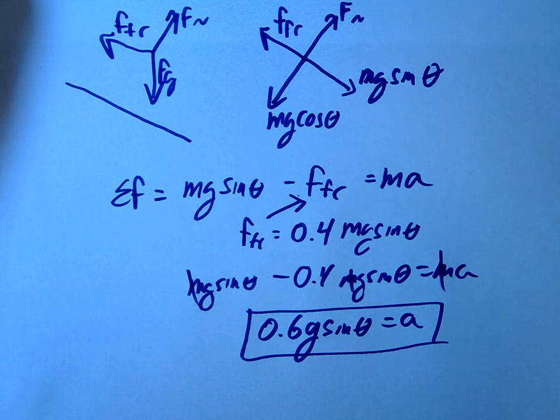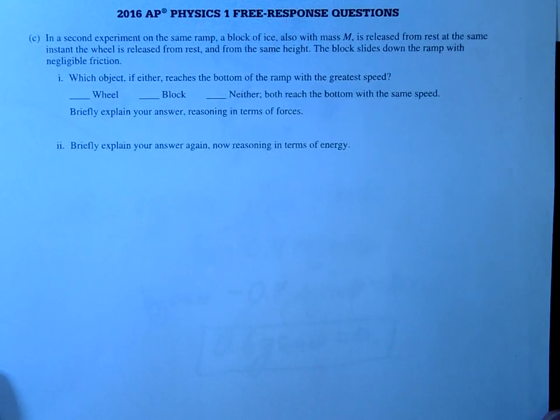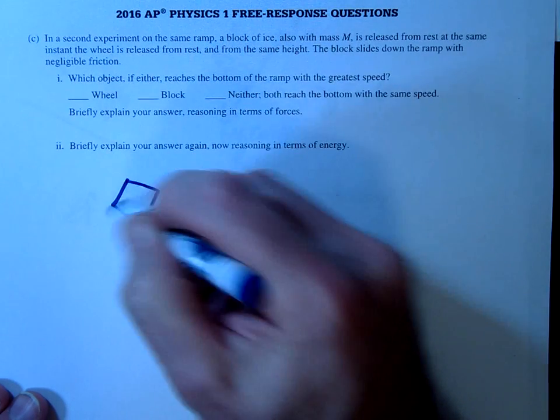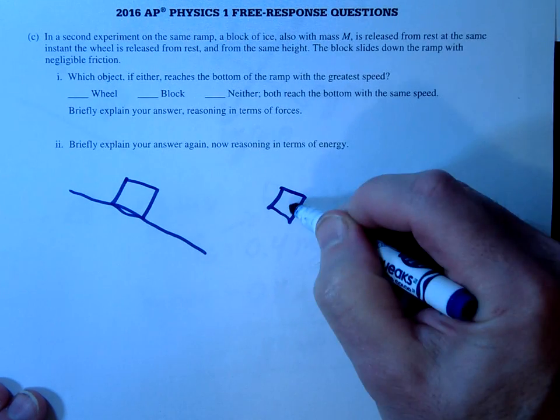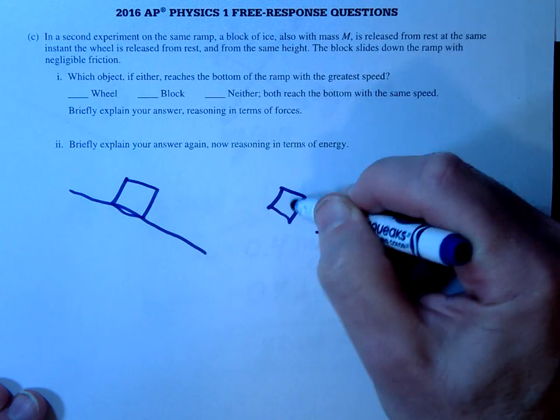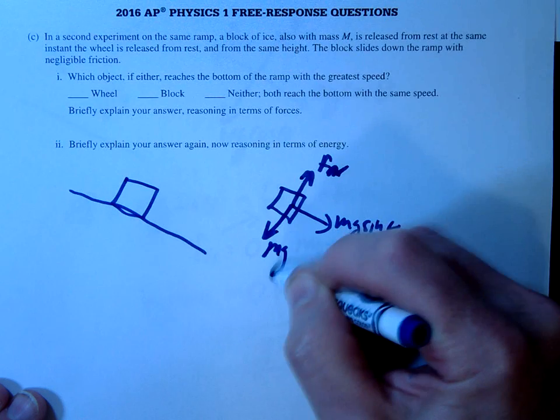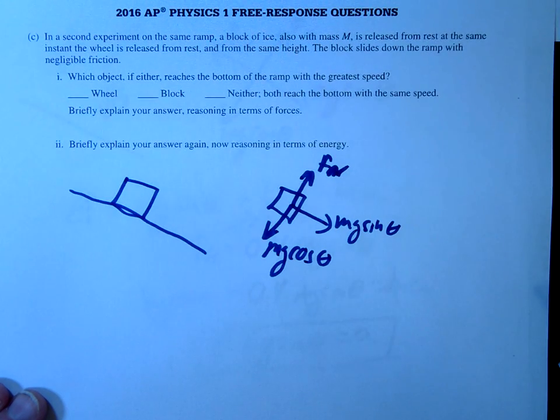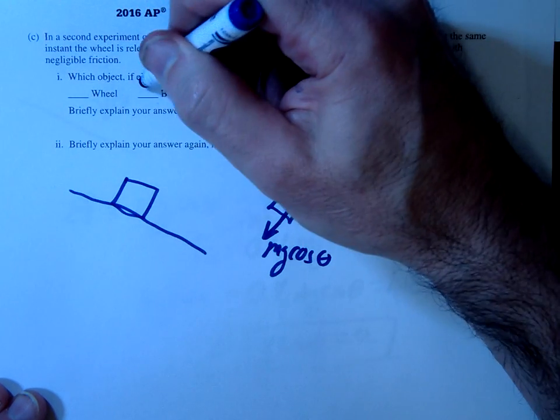Alright, last question, letter C. This time we're going to have a block of ice going down the ramp. So our ice is going to look like this and it says negligible friction. So in other words, in our FBD we're going to have simply mg sine theta and then of course our normal and mg cos, but no friction. So the first part of the question is, which object reaches with more speed? So hopefully you can see that clearly the block is going to reach with more speed.